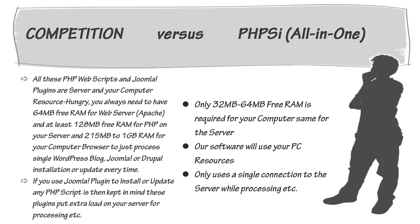All these PHP web scripts and Joomla plugins are server and computer resource hungry. You always need to have 64 megabytes of free RAM for the web server Apache, and at least 128 megabytes of free RAM for PHP on your server, and 215 megabytes to 1024 megabytes of RAM for your computer browser, just to process a single WordPress, Joomla, or Drupal installation or update every time. And Joomla plugins used to install or update any PHP script put extra load on your server for processing.